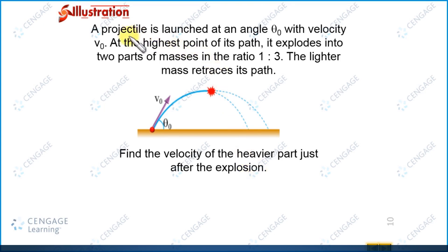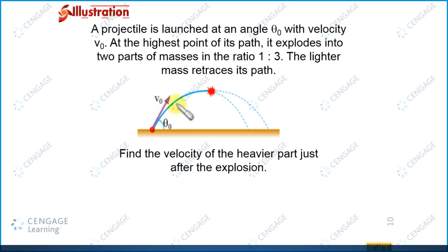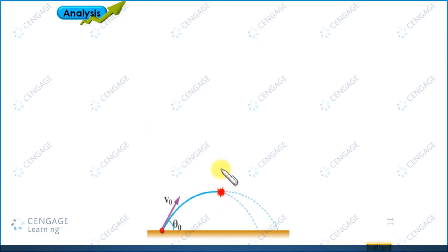Now let us analyze the situation. This projectile is projected with initial velocity v naught at angle theta naught. We know in the case of a projectile, the horizontal component of velocity remains constant always. That means at the highest point, the velocity of the projectile should be equal to v naught cos theta naught. So let us make the diagram for this situation. Initially, just before explosion, the particle should have velocity v naught cos theta naught.